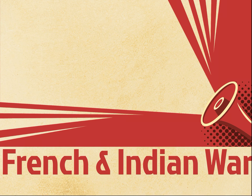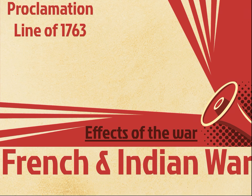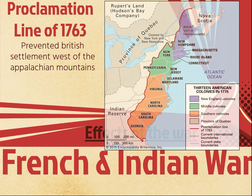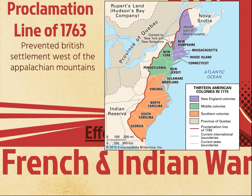So the French and Indian War happens. All you really need to know about the French and Indian War are the effects of the war. The first effect is the Proclamation Line of 1763, which basically said that the British could not move past the Appalachian Mountains. It put in a clear border so that French and British settlers did not intermingle and did not cause problems. Here's a picture of that line.